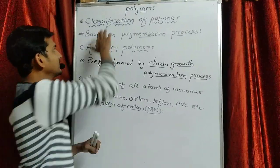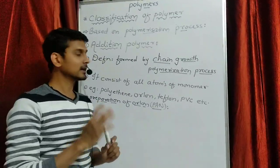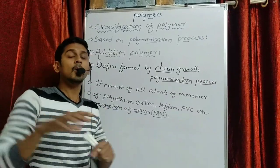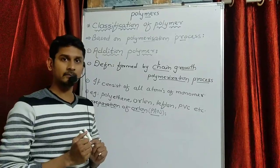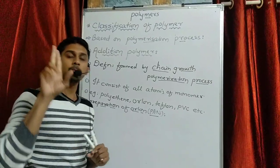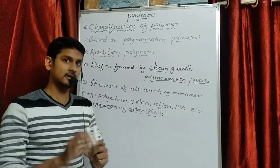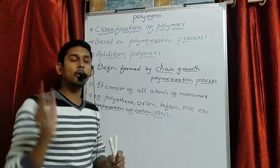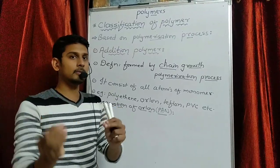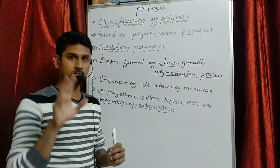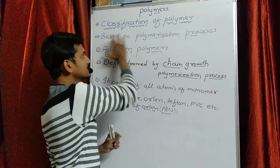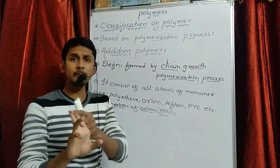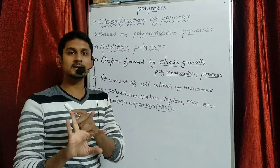Now we will start with classification of polymer based on polymerization process. Polymer is classified based on which process it is made. First, polymer is made in two processes: addition and condensation reaction. But polymer will be classified into three types. The third type is ring opening polymer, which is the middle part between addition polymer and condensation polymer. So based on polymerization process, polymers are classified into three types: number one, addition polymer; number two, ring opening polymer; and number three, condensation polymer.